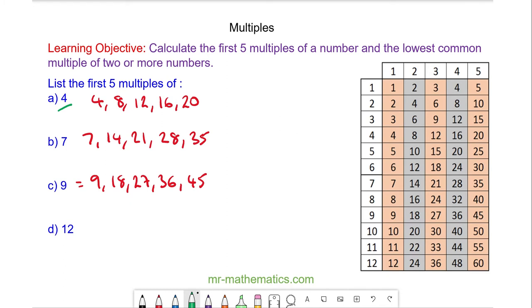And for question D, the multiples of 12 are 12, 24, 36, 48 and 60. We can check this works because the term to term rule every time we are adding 12.